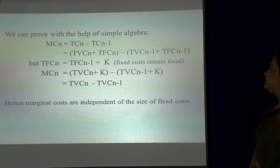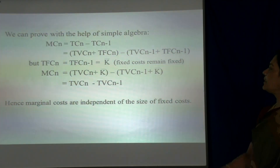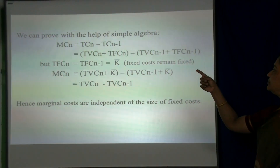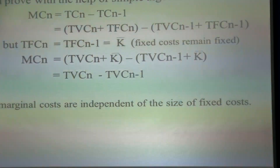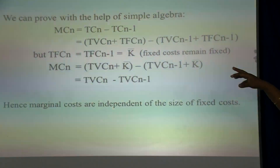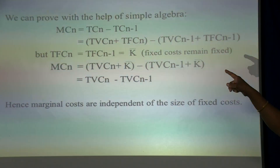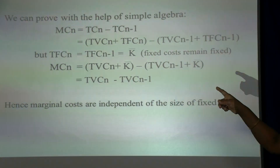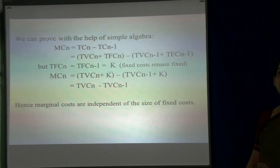We can prove this with the help of a simple algebraic formula: MC of n = TC of n − TC of (n−1). Since total cost is a summation of total fixed cost and total variable cost, we substitute TVC(n) + TFC(n) − TVC(n−1) − TFC(n−1). Since TFC(n) = TFC(n−1) = K̄ (fixed), substituting K̄ cancels out, and we get TVC(n) − TVC(n−1). Hence, marginal cost is independent of the size of fixed cost.